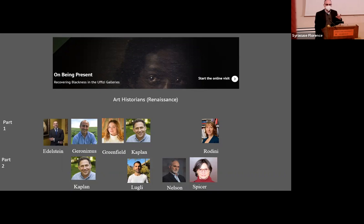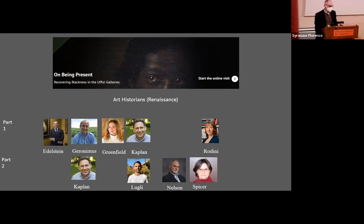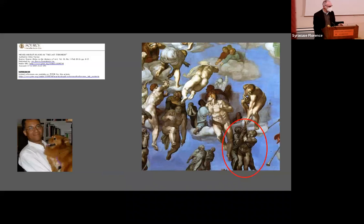There's a wonderful online exhibition I encourage you to check out — it's free, on the Uffizi website, called 'On Being Present,' organized by Black History Month Florence with curator Justin Thompson. In it, scholars from various fields investigate some well-known and obscure paintings, asking why Black figures are there and what roles they have. If you limit yourselves to art historians by training, the group is almost entirely white, and among Renaissance historians, it's a white ghetto. This is 2022.